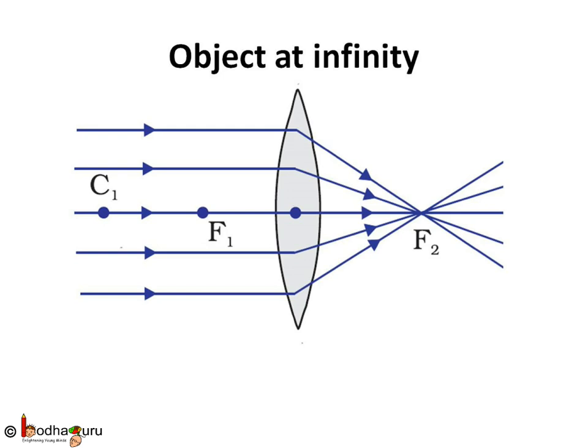Let us take some examples. The object is placed at infinity, that is a large distance from the lens. Draw multiple lines parallel to the principal axis and they will pass through the focus after passing through the lens.